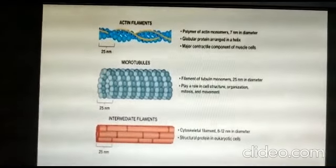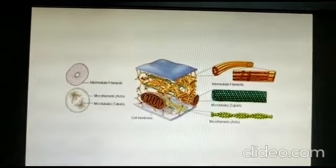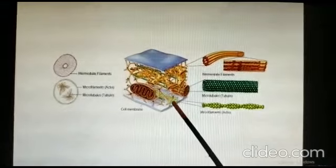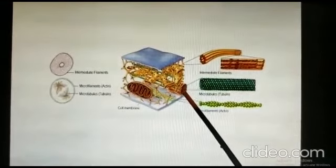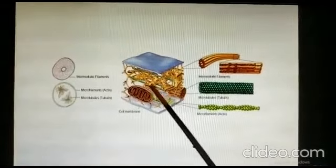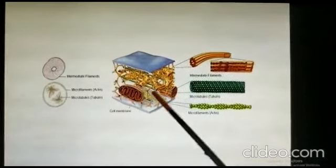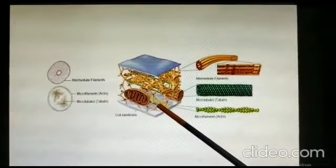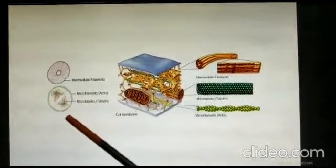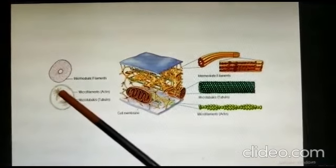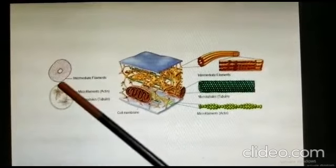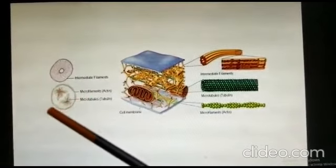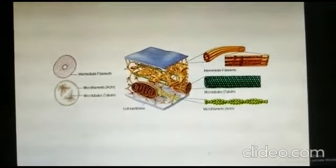These three structures support the cell. Here you can see the microfilaments, the microtubules, and the intermediate filaments, which help in attaching these filaments and maintaining the shape of the cell. At the time of chromosome separation, you can see the tubules, the asters — all made up of microtubules — and the surface lining is made up of microfilaments.